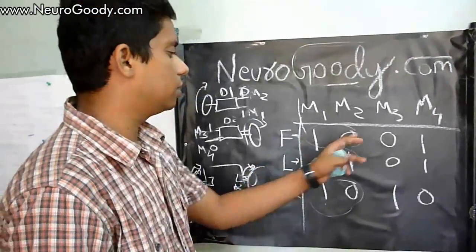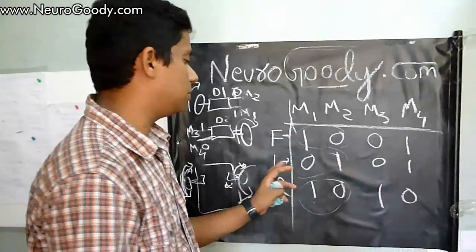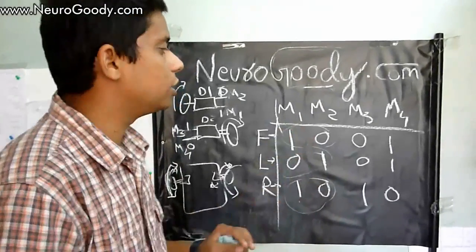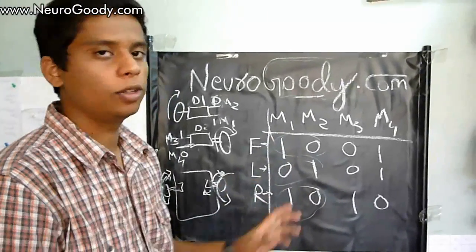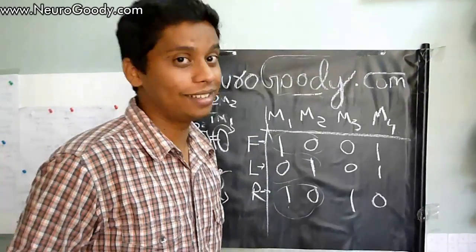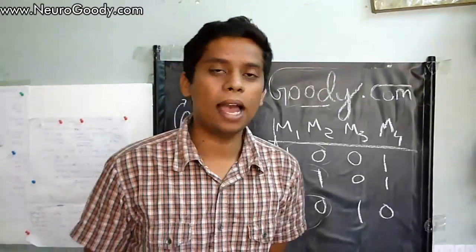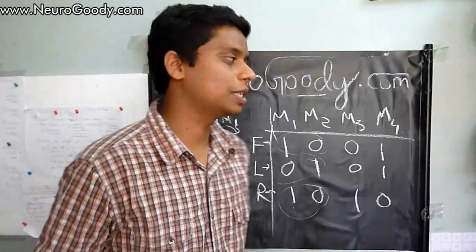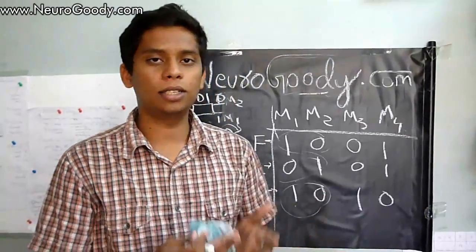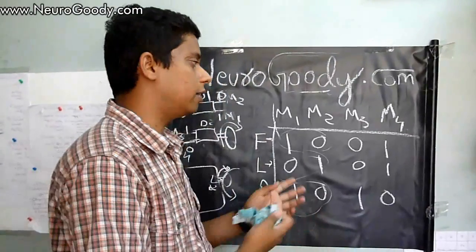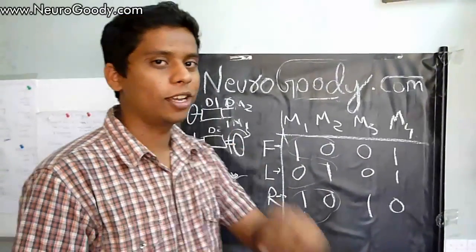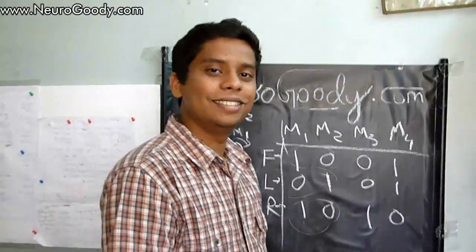So to summarize the output equations: Forward is M1=1, M2=0, M3=0, M4=1; Left is M1=0, M2=1, M3=0, M4=1; Right is M1=1, M2=0, M3=1, M4=0. That is how it was assigned in the actual algorithm. In the next part we'll be looking at the sensors and actual hardware implementation of the logic gate robot. No more waiting — see ya!